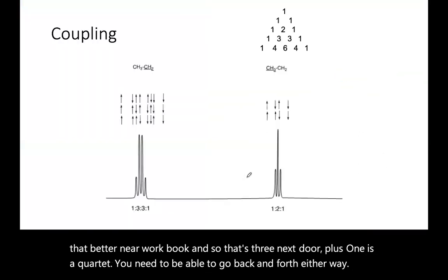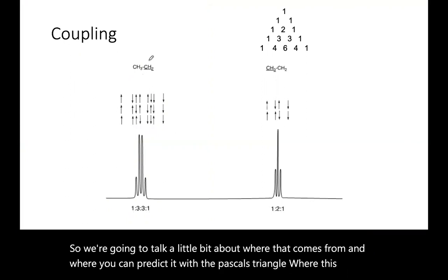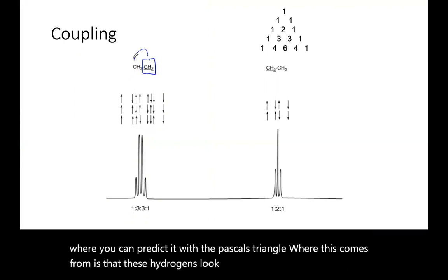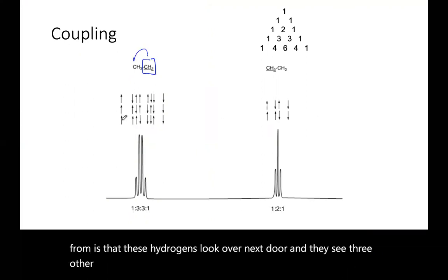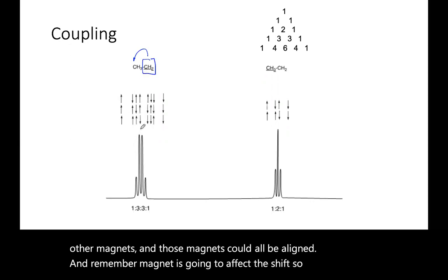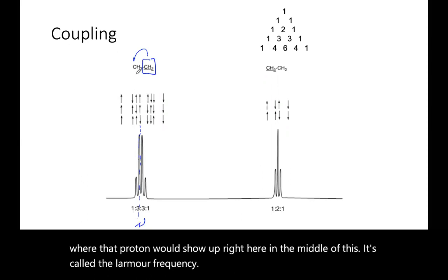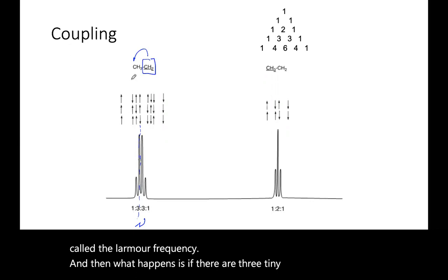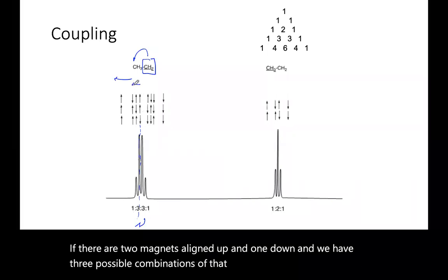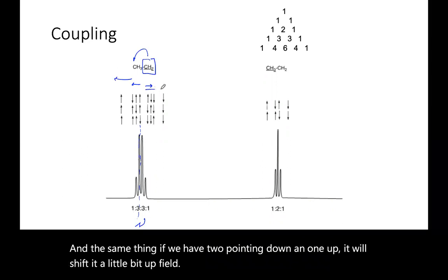We're going to talk about where that comes from and where you can predict it with Pascal's triangle. These hydrogens look over next door and they see three other magnets. Those magnets could all be aligned. Remember, a magnet is going to affect the shift. If there are three tiny magnets all aligned, it will shift it this way. If there are two magnets aligned up and one down, and we have three possible combinations of that, it will shift it a little bit that way. Same thing, if we have two pointing down and one up, it'll shift it a little bit upfield, and more upfield if they're all pointing down.